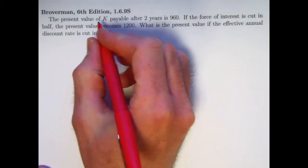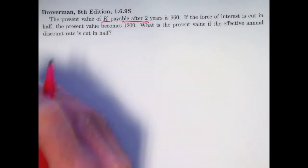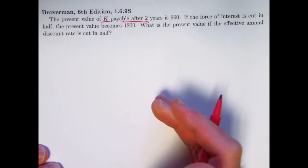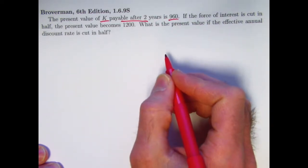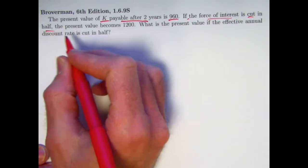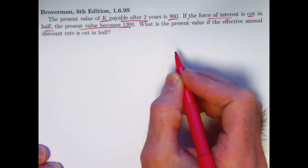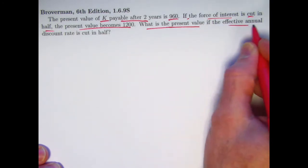It says the present value of K, that's going to be payable in two years. So this amount, the future value of it in two years is K. The current or present value is 960. If the force of interest is cut in half, the present value becomes 1200. What is the present value if the effective annual discount rate is cut in half?